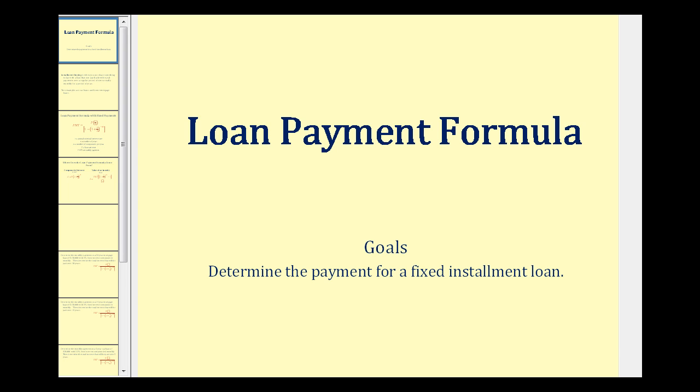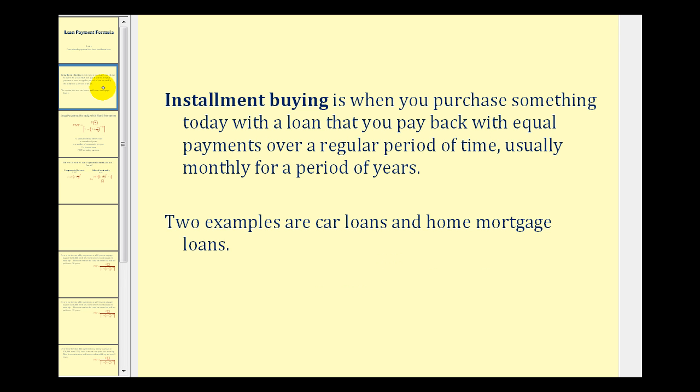Welcome to a lesson on the loan payment formula. The goal of this video is to determine the payment for a fixed installment loan. Installment buying is when you purchase something today with a loan that you pay back with equal payments over a period of time, usually monthly for a period of years. The two most common examples would be a car loan or a home mortgage loan.